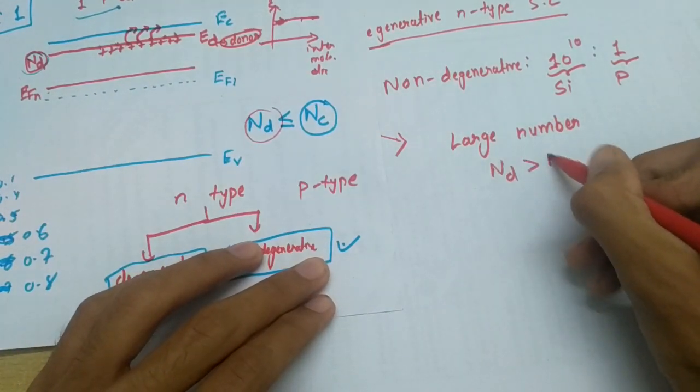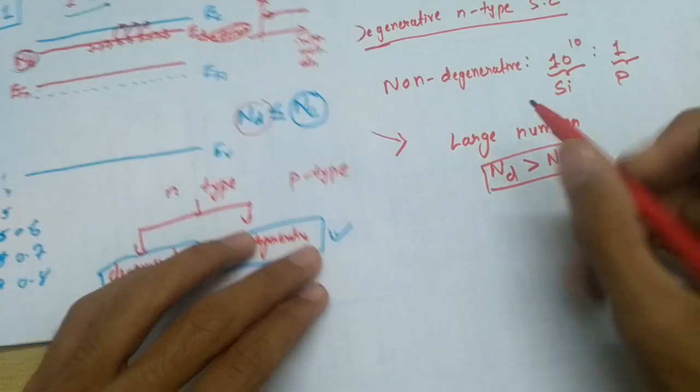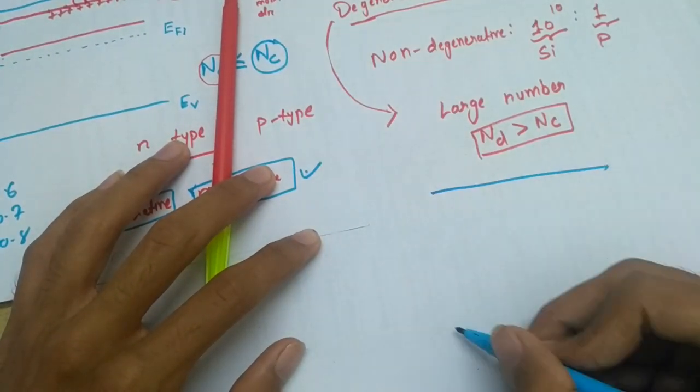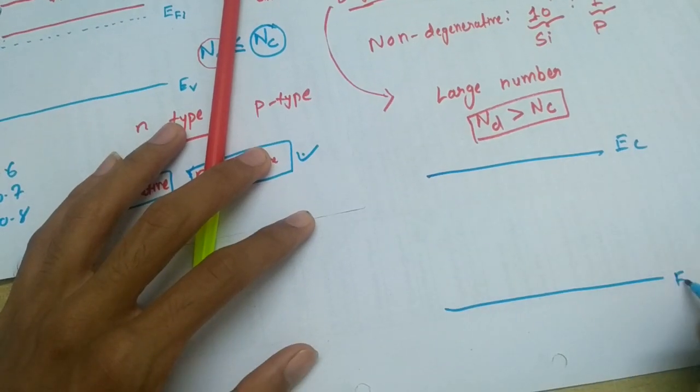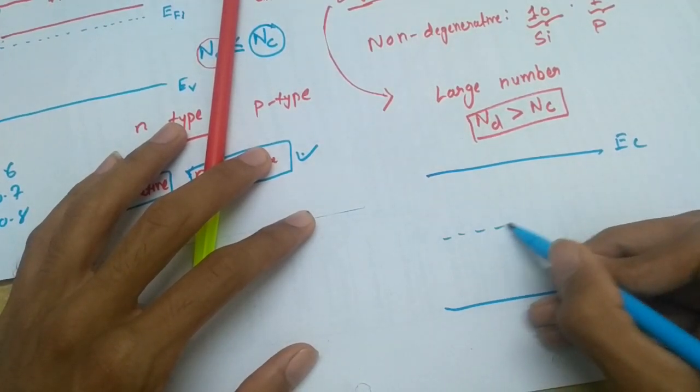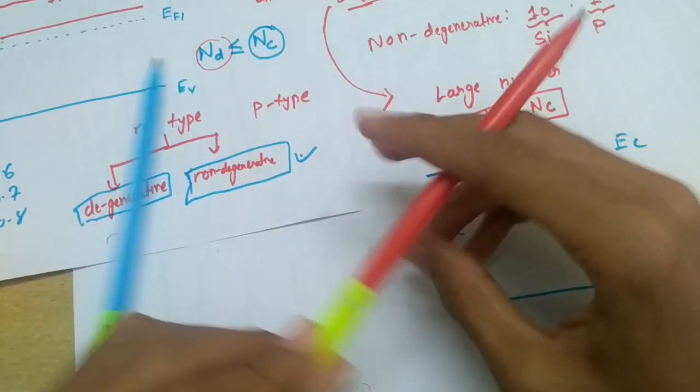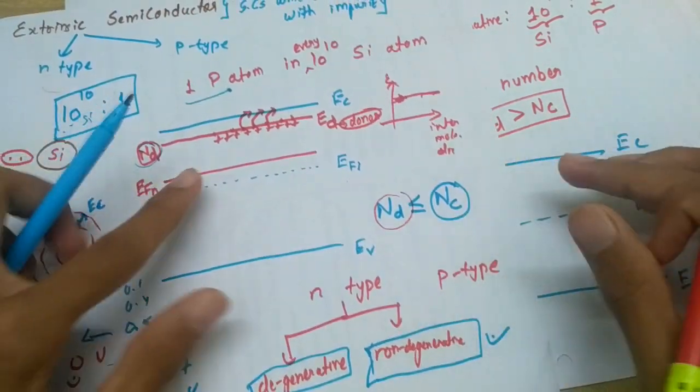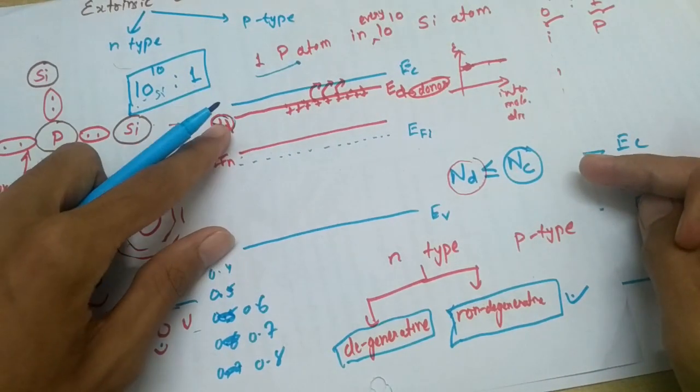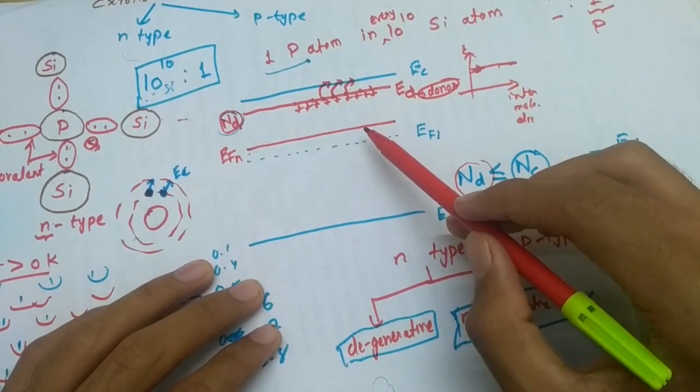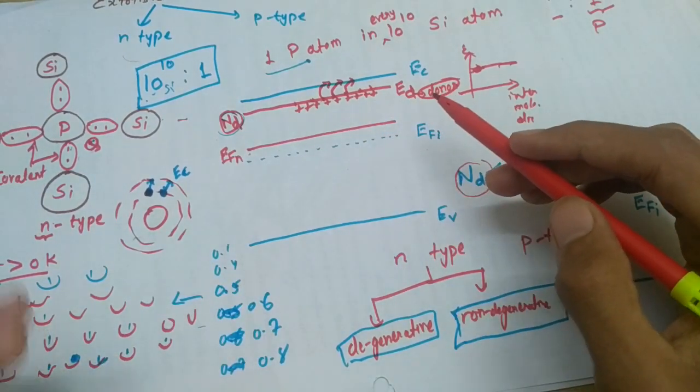In this case, what will happen to the energy band diagram? This will be EC, this will be EV, and for reference just I am drawing EFI. In simple non-degenerative type, this EFN was just slightly above EFI due to addition of electrons.